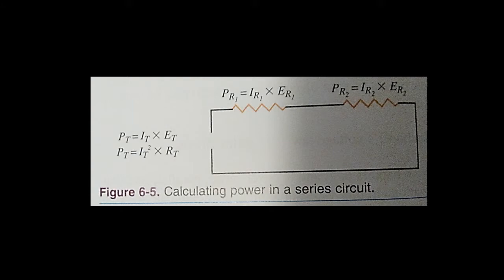It is very important to remember that the wattage rating of a resistor is not the amount of energy it uses. The wattage rating of a resistor is the amount of energy in the form of heat the resistor can safely dissipate without being damaged. In other words, a 2.2 kilo ohm resistor rated at a quarter watt does not consume 0.25 watts. A quarter watt is the maximum amount of heat energy it can safely dissipate without damage.